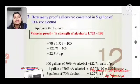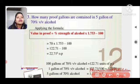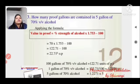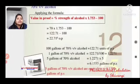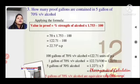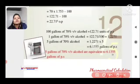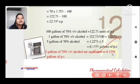Next problem: How many proof gallons are contained in 5 gallons of 70% v/v alcohol? Proof value = 70 × 1.753 − 100 = 22.71, so it is 122.71 proof. For 100 gallons → 122.71; for 1 gallon → 122.71/100; for 5 gallons → 122.71 × 5/100 = 6.1355 proof gallons.